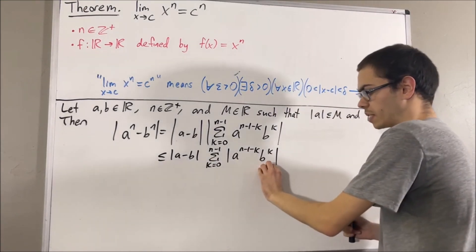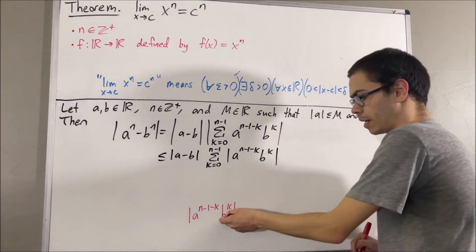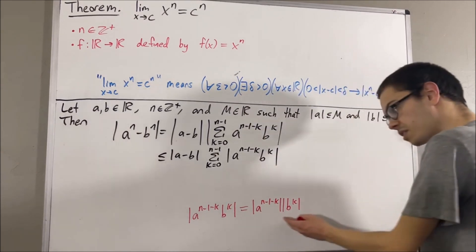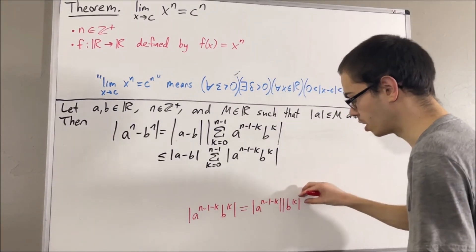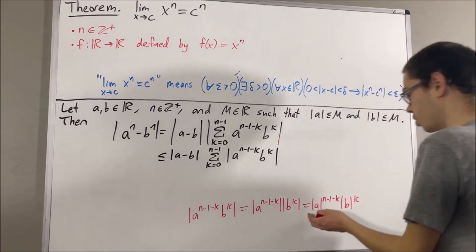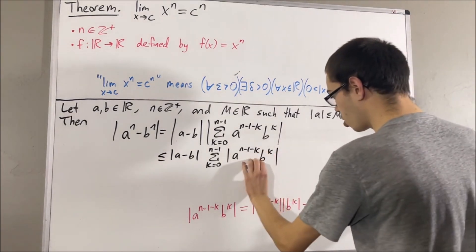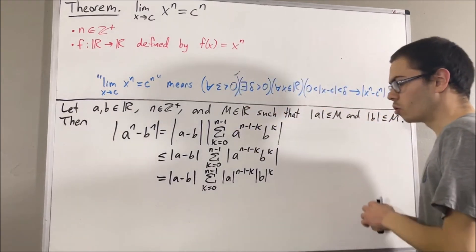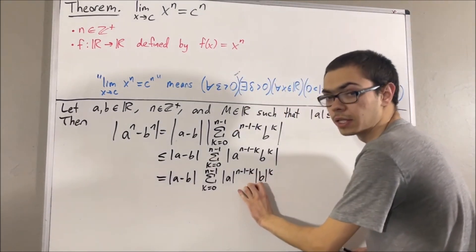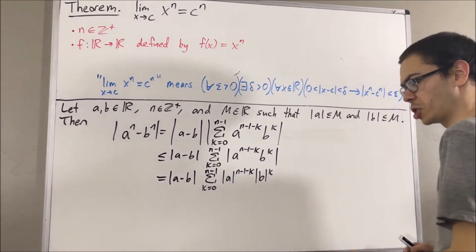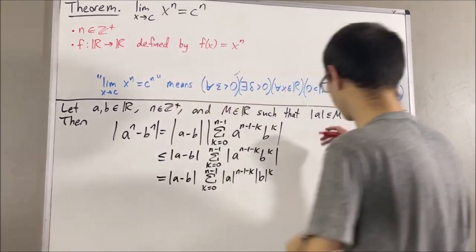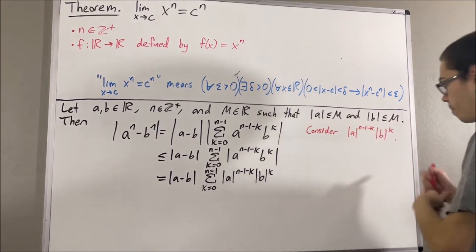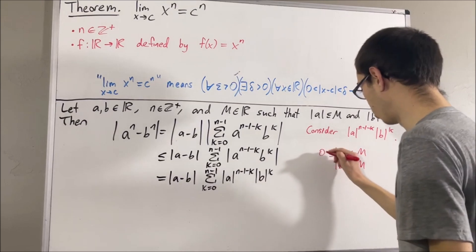If we take an arbitrary term of this sum, we can re-express it by applying the product property for absolute values. Then another property of absolute values tells us we can pull the exponent to the outside of the absolute value. So we replace this arbitrary term accordingly. We are going to show that every term of this sum is less than or equal to a particular value. We know that the absolute value of a is less than or equal to capital M, and the absolute value of b is less than or equal to capital M, and both are greater than or equal to zero.